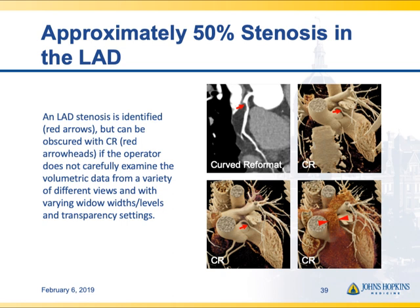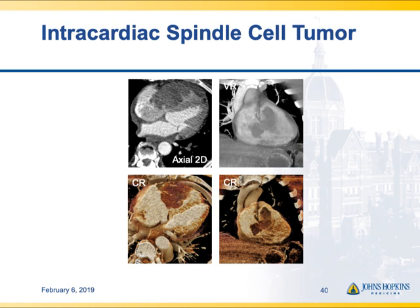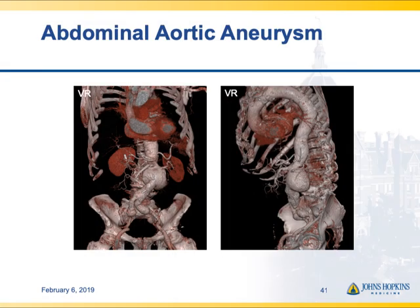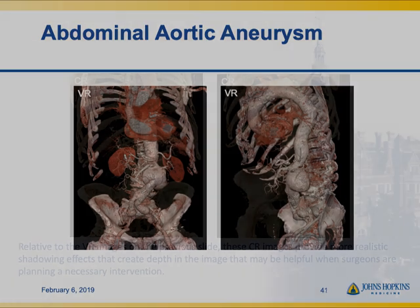If you've improperly chosen your windowing and don't have the right presets, the main pulmonary artery can actually obscure your pathology in the LAD stenosis case — shown in the bottom right panel. You really have to interact with the datasets and get a variety of views to not miss pathology. Here's a patient with an intracardiac spindle cell tumor — you get a nice sense for how the tumor interrupts the contrast column within the heart chambers and a bit of the tumor's texture on the cinematic rendered images.